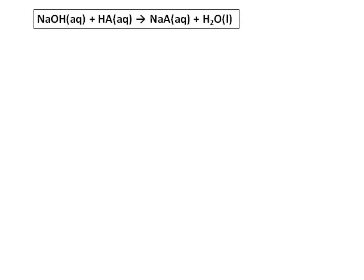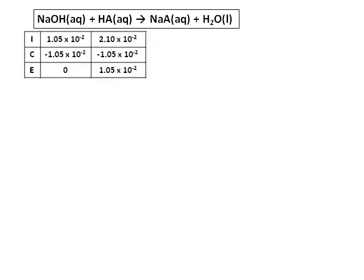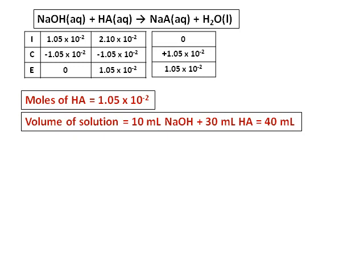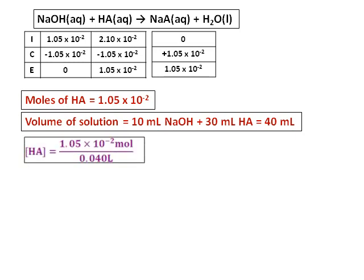Using the moles of HA and moles of NaOH calculated previously, we react them together and write the equation and ICE table. After the neutralization reaction, I get the moles of HA as 1.04 × 10⁻² moles. The total volume of the solution at this moment is 10 milliliters of sodium hydroxide plus 30 milliliters of HA, giving a total volume of 40 milliliters. From the moles of HA divided by the volume, I get the concentration of the acid as 2.63 × 10⁻¹ molar.